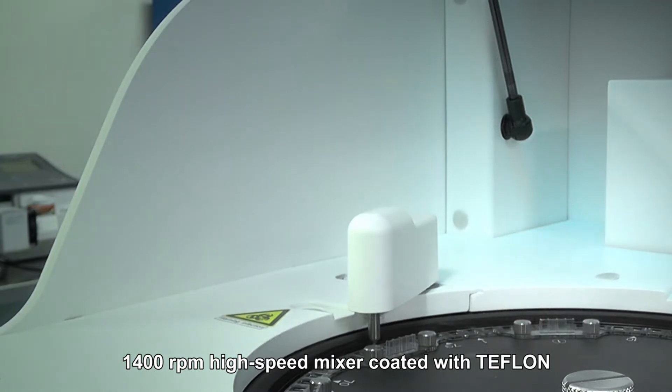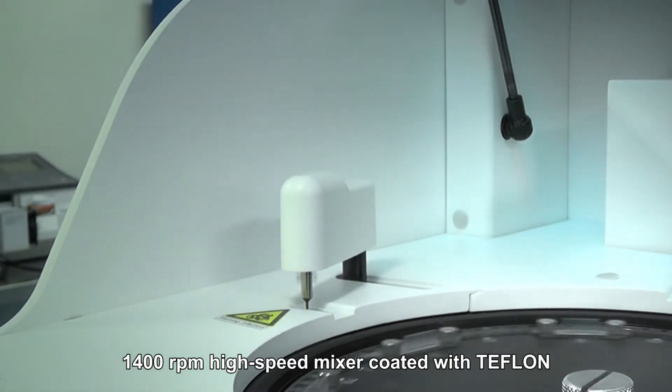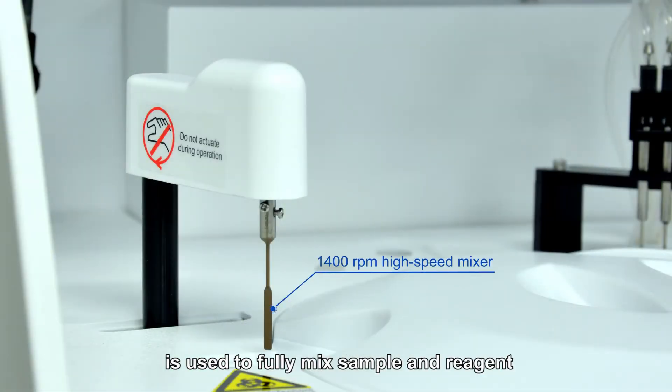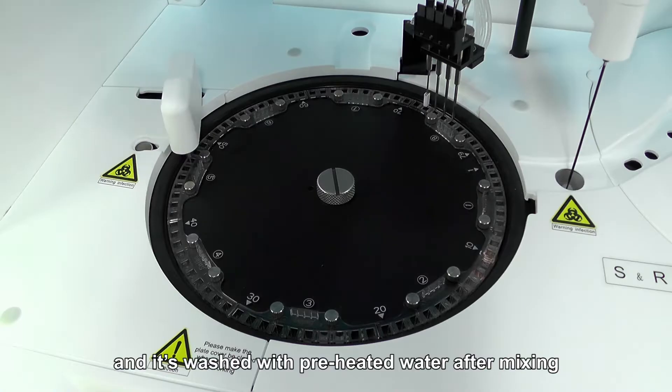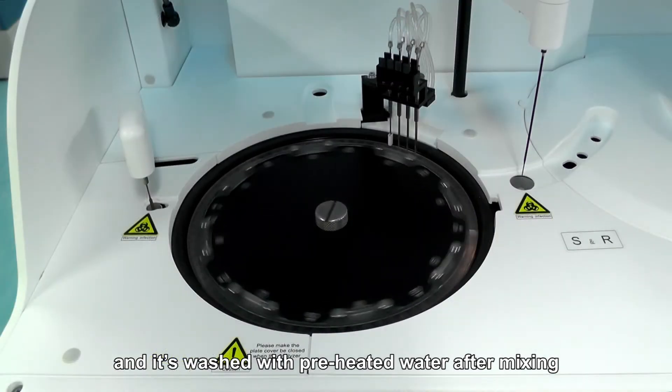1,400 RPM high-speed mixer coated with Teflon is used to fully mix sample and reagent and is washed with preheated water before and after mixing.